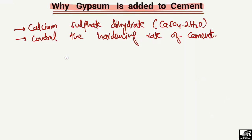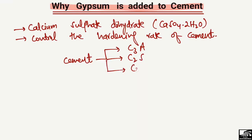If we look at the composition of cement, it is composed of four main components: C3A, which is tricalcium aluminate; C2S, dicalcium silicate; C3S, which is tricalcium silicate; and C4AF, which is tetracalcium aluminoferrite. These are the four important ingredients in the production of cement.